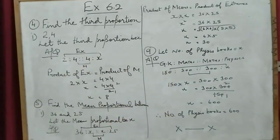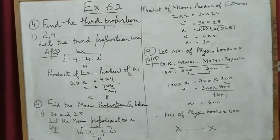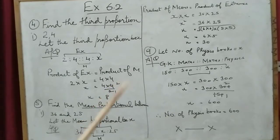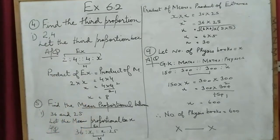See your books: the sixth sum is 'find the third term', the seventh is 'find the first term', and the eighth is 'find the value of x'. Wherever it is written 'find the third term', suppose the third term as x. If it is 'find the first term', suppose the first term as x. Whatever we have to find, suppose that as x.